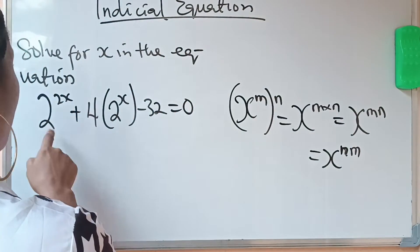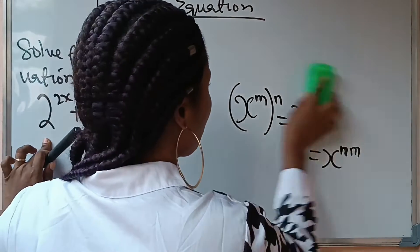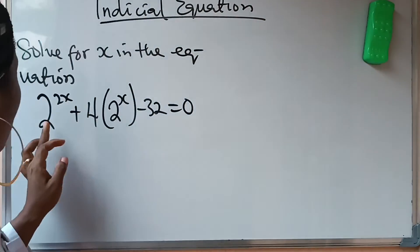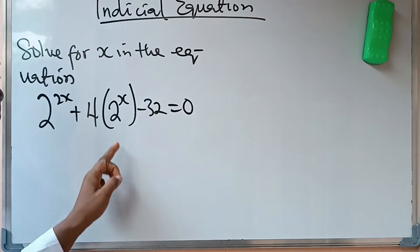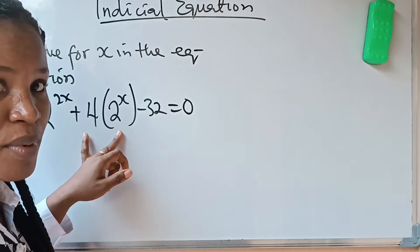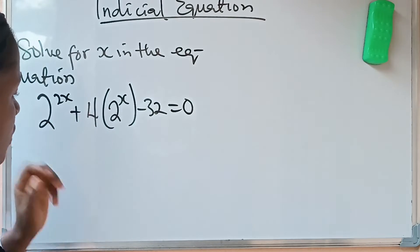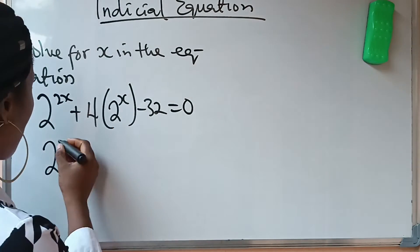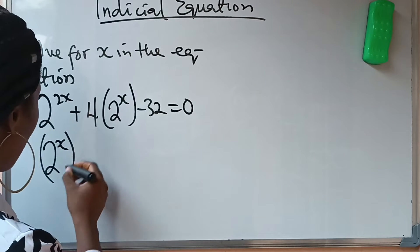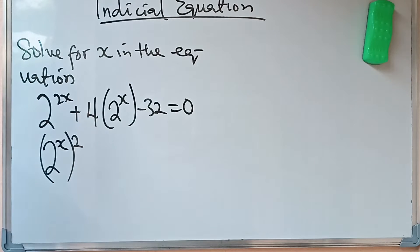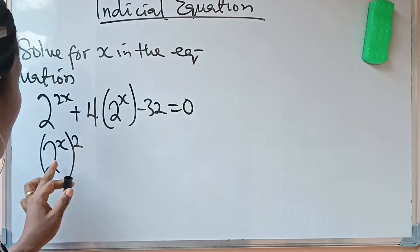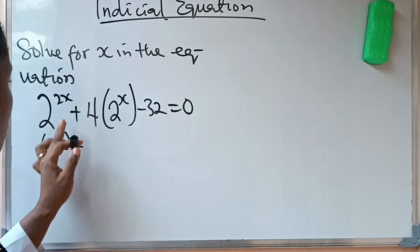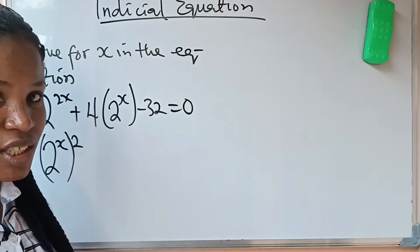So I'm going to apply that law here. Instead of writing 2 raised to the power of 2x, because I want to bring out 2x — just like the way I have it in the brackets — I'm going to write 2 raised to the power of x first, bracket it, and bring out the 2 outside. Because using that law, this can be written as 2 raised to the power of x times 2, which still gives me 2x. So I've not changed anything.